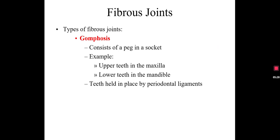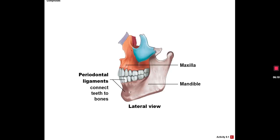The fourth type of fibrous joint is known as a gomphosis. This consists of a peg fitting into a socket. A perfect example are our teeth, whether it's the upper teeth going into the alveolar process of the maxilla, or the lower teeth going into the alveolar process of the mandible. These are considered gomphosis. There are ligaments in there that hold the tooth in the socket, known as the periodontal ligaments. Here we can see the alveolar process of the maxilla above and the alveolar process of the mandible below, with the sockets for the teeth.